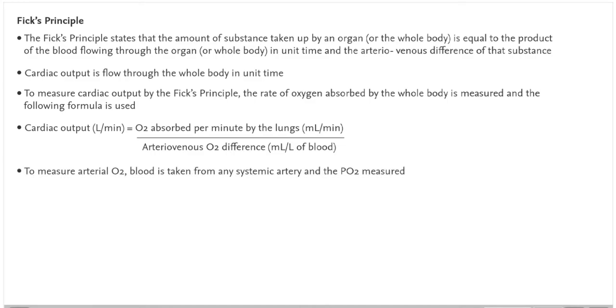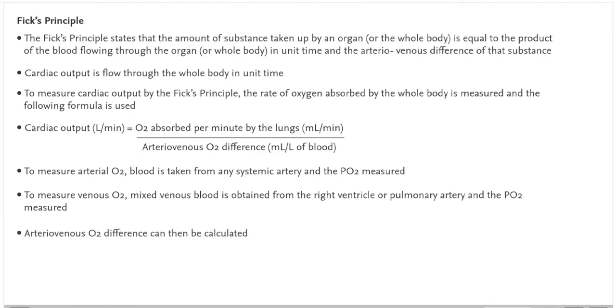To measure arterial oxygen, blood is taken from any systemic artery and the partial pressure of oxygen measured. To measure venous oxygen, mixed venous blood is obtained from the right ventricle or pulmonary artery and the partial pressure of oxygen measured. Arteriovenous oxygen difference can then be calculated.